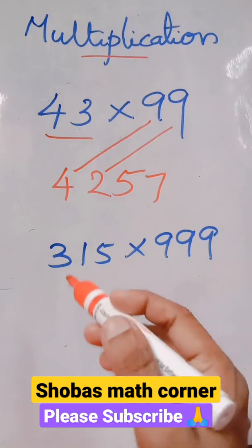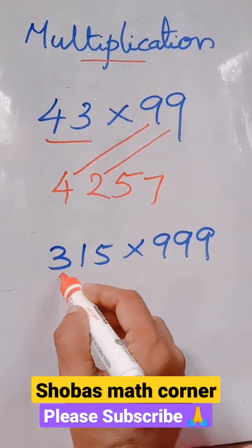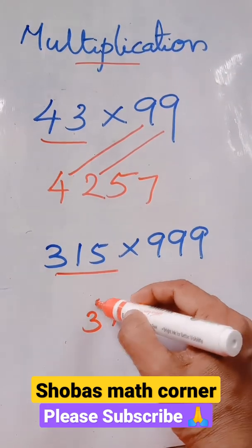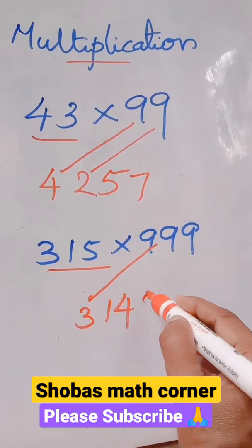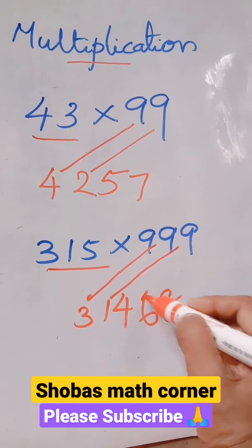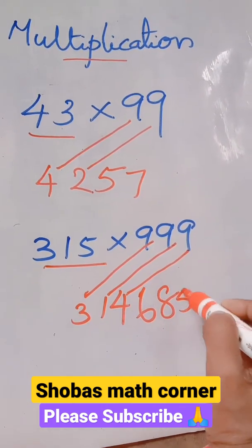Let's see one more example in this. 315 before number? 314. Then what should be added to 3 for getting 9? 6. 1 with 9, you should add 8. Then 4 with 9, you should add 5.